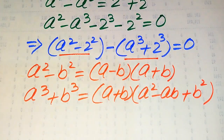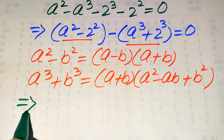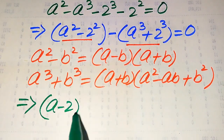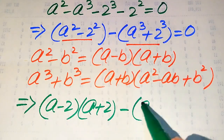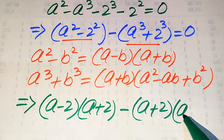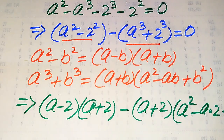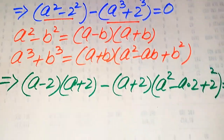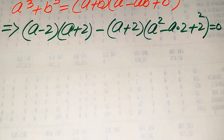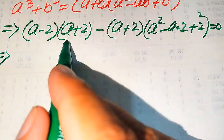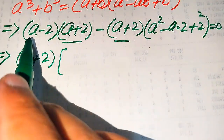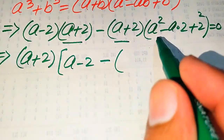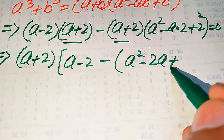Applying the square identity to a squared minus 2 squared gives (a minus 2)(a plus 2). Applying the cubic formula to a cubed plus 2 cubed gives (a plus 2)(a squared minus 2a plus 4). The equation becomes (a minus 2)(a plus 2) plus (a plus 2)(a squared minus 2a plus 4) equals zero. Both terms involve (a plus 2), so we factor it out, leaving (a minus 2) and (a squared minus 2a plus 4).